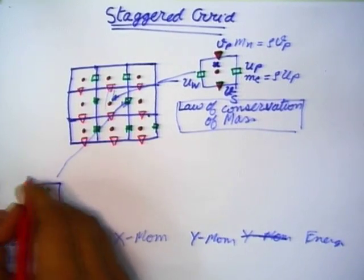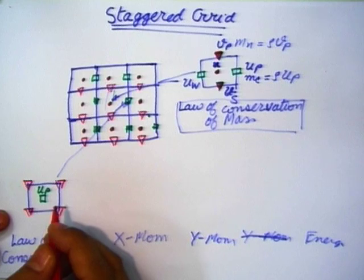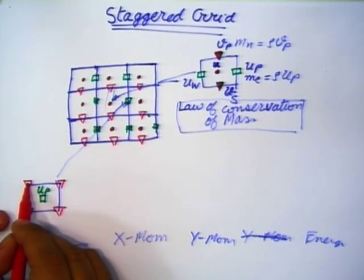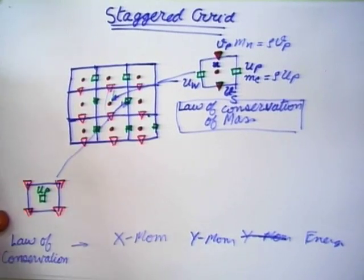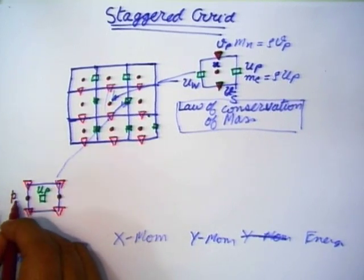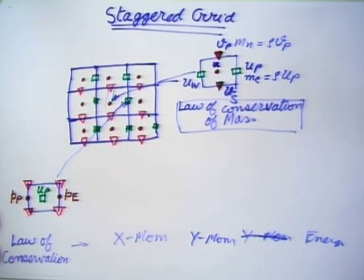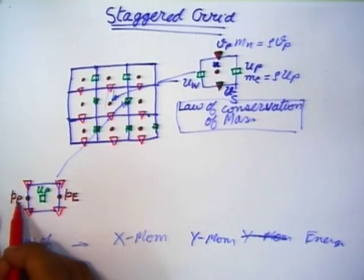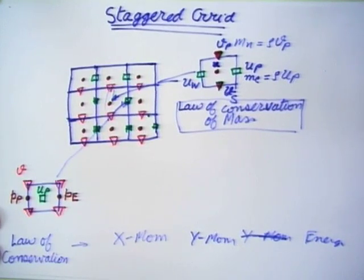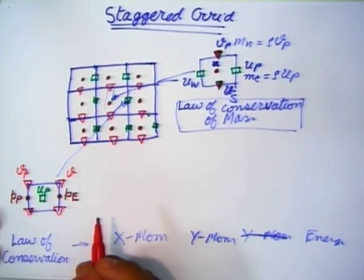The pressure grid points also need to be drawn. This will be P subscript P and this will be P subscript E. Because once you write the subscript for P, it is easy — all references are taken with respect to pressure. So if this is P and this is u_P, then this corner will be v subscript E.